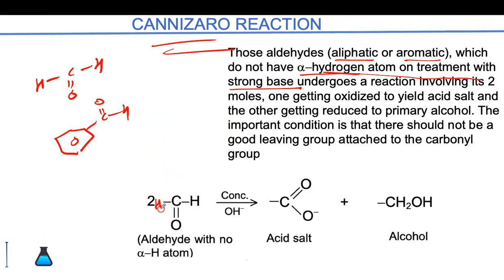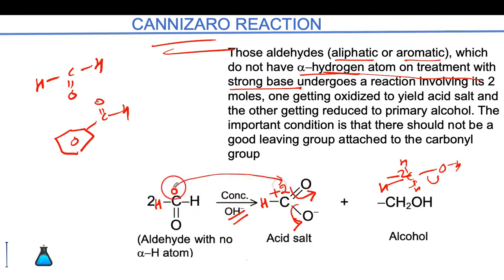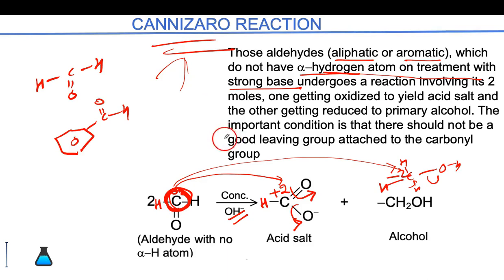Consider two molecules of formaldehyde. The oxidation state of carbon in formaldehyde is zero. Under the Cannizzaro reaction, one molecule is converted to carboxylic acid — the carbon loses two electrons, going to +2 — while the other is converted to alcohol, where carbon goes from zero to -2, gaining two electrons. When one atom gains two electrons and another atom of the same element loses two electrons, this is called disproportionation. So Cannizzaro is a very good example of a disproportionation reaction.